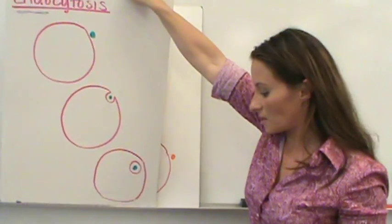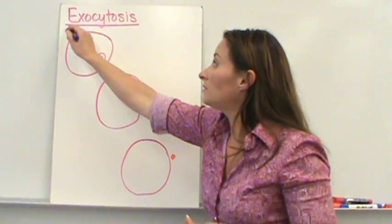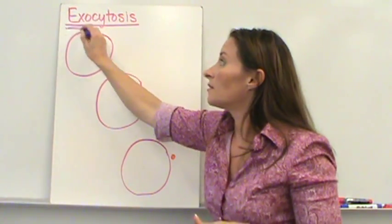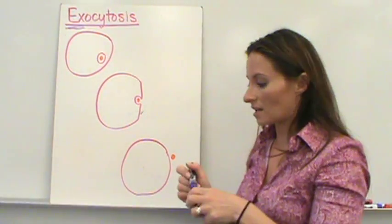Exocytosis, on the other hand, is going to be just the opposite. Exo, the prefix X, means out as in exit. You're going to move something out of the cell.